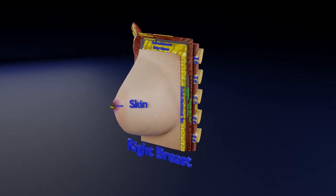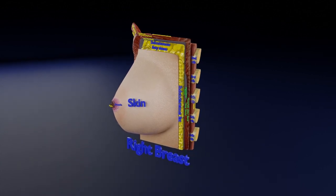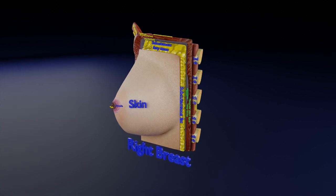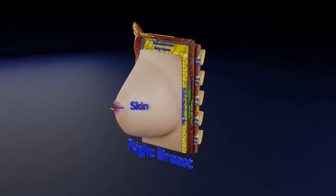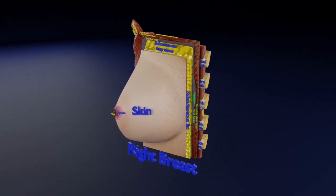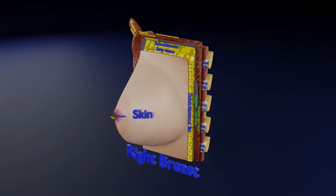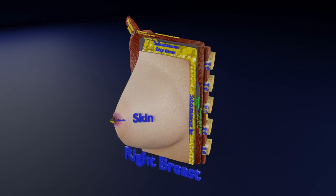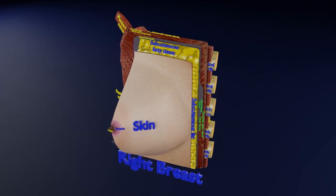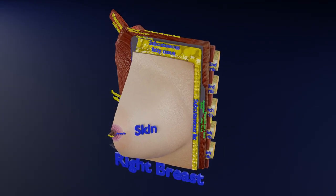The female breast in humans contains mammary glands that produce milk for nursing their young. In this view, you can see the cut open section of the right female breast.